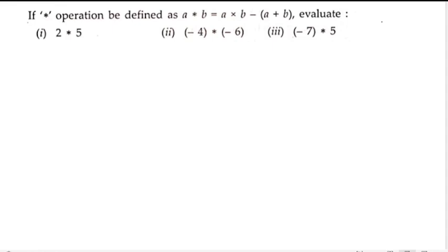Here we are having a question. If star is an operation defined as a star b equals a into b minus (a plus b), evaluate: (i) 2 star 5, (ii) minus 4 star minus 6, and (iii) minus 7 star 5.